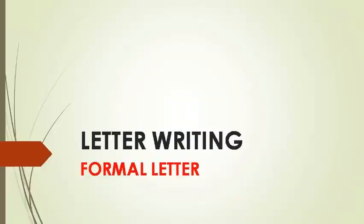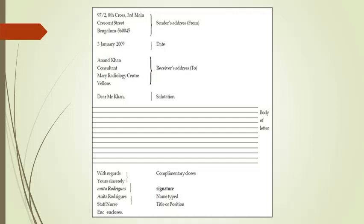Hello students, welcome back. Let's go to a new topic today in letter writing. You already know that there are two types: formal letter and informal letter. Let's go first to formal letter. A formal letter is a letter which is written in a proper format — an official letter. You can see the pattern of the formal letter: sender's address, date, receiver's address, salutation, body of the letter, complimentary closure, signature, and enclosures.